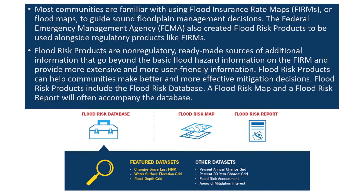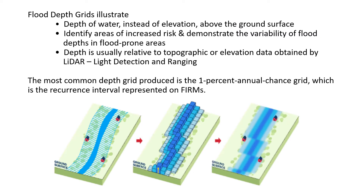A flood risk map and a flood risk report will often accompany the database. Flood depth grids illustrate the depth of water instead of elevation above the ground surface. Grids identify areas of increased risk and demonstrate the variability of flood depths in flood-prone areas.